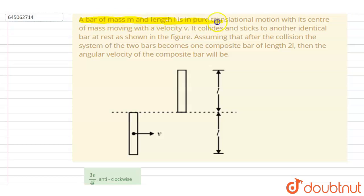m and length l is in pure translational motion with its center of mass moving with velocity v. It collides and sticks to another identical bar at rest as shown in the figure. Assuming that after collision the system of the two bars becomes one composite bar of length 2l, then the angular velocity of the composite bar will be?